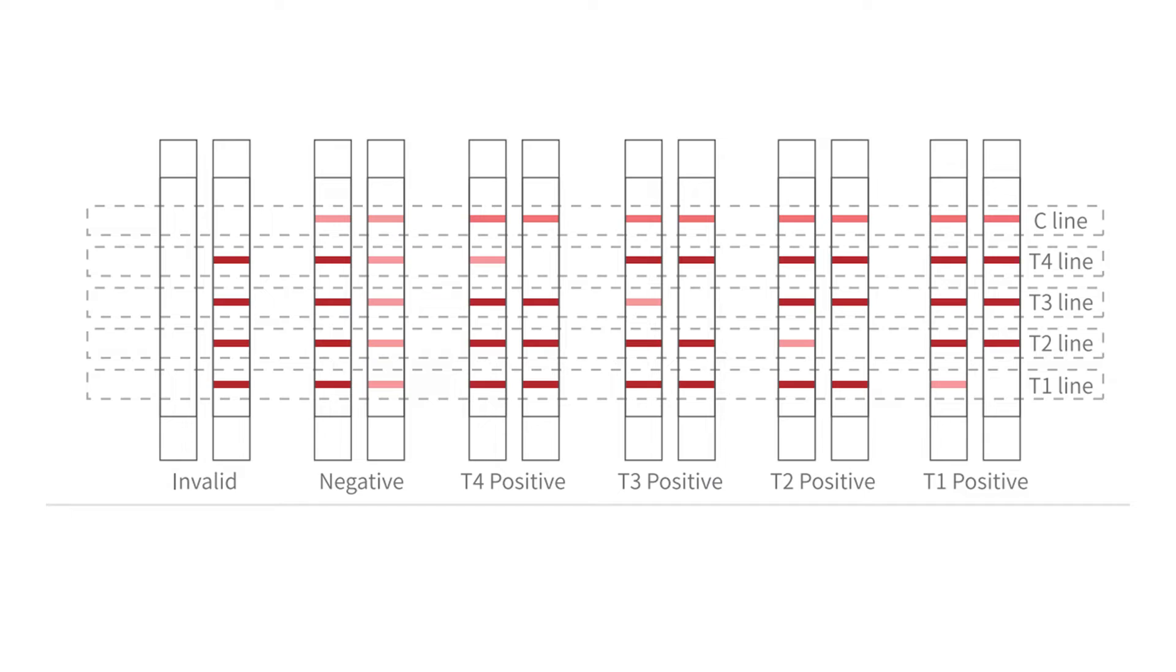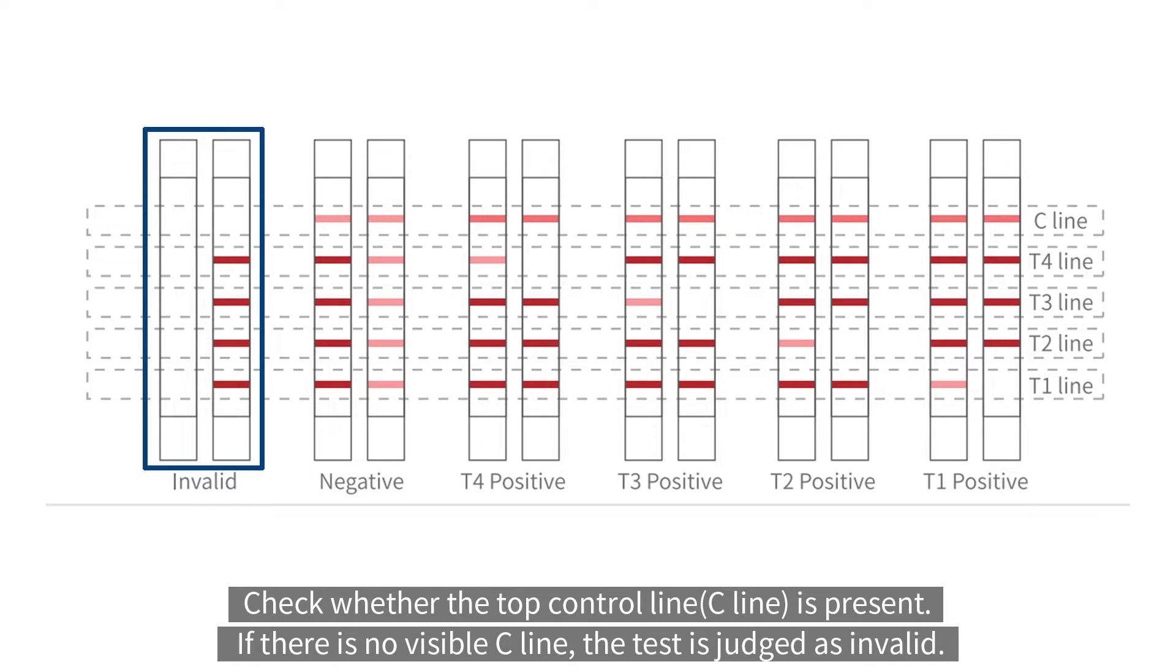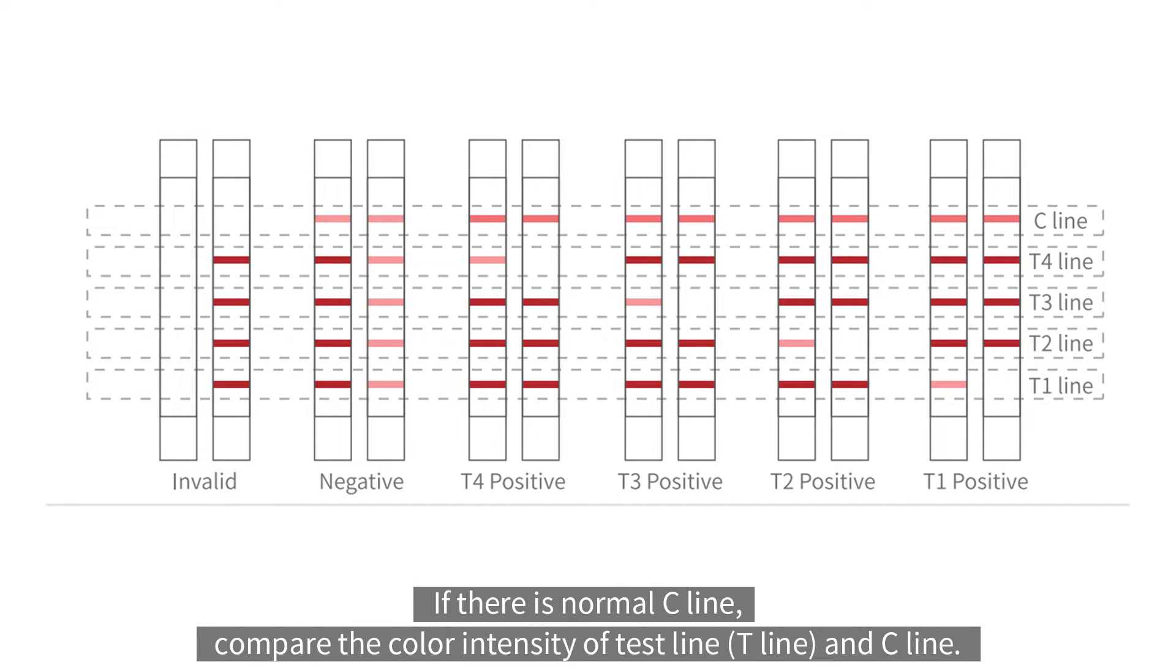Read by Eyes. Check whether the top control line is present. If there is no visible C line, the test is judged as invalid. If there is normal C line, compare the color intensity of test line and C line.